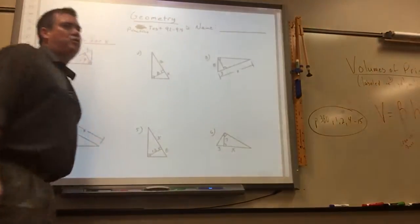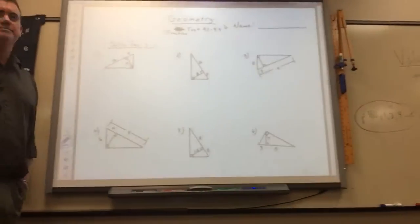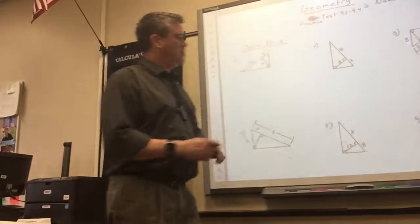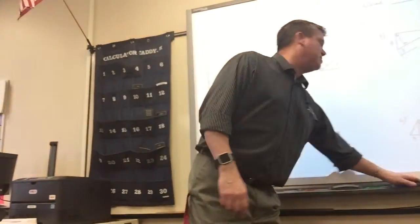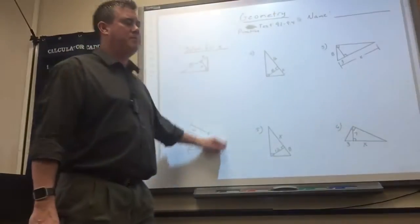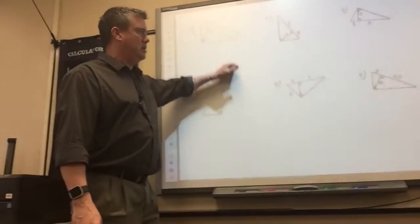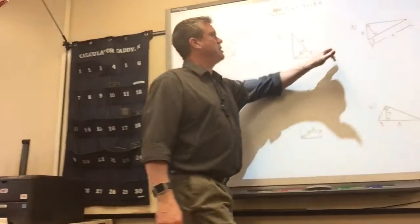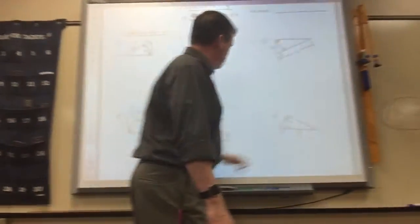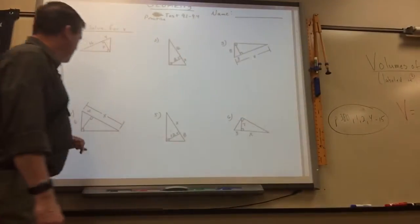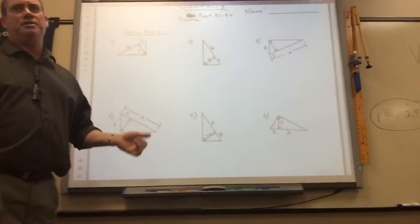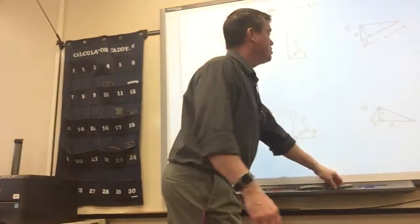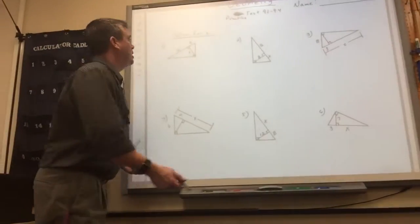This is a review test. The first page is all from the beginning of the chapter. They're all right triangles that have altitudes drawn in them, so these are all the geometric means. You have to write a proportion for these.